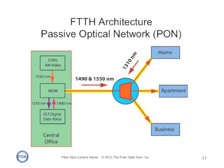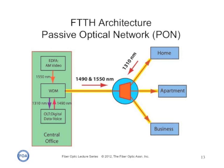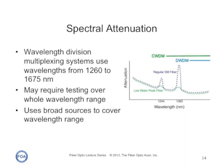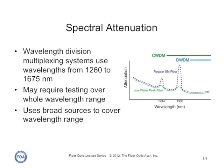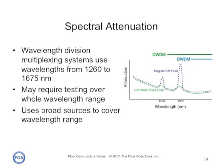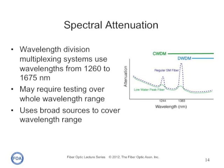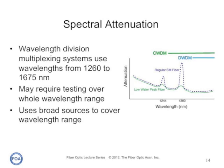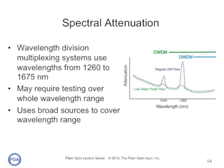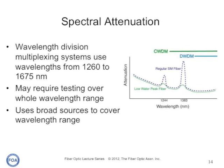Future developments will give each home, apartment, or subscriber their own wavelength. Wavelength division multiplexing systems sometimes require either special fibers or special testing. A new class of fibers called low water peak fiber reduces the water absorption bands around 1400 and 1250 nanometers to allow a broader spectral range to be used for coarse wavelength division multiplexing.